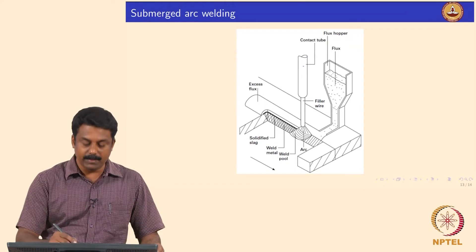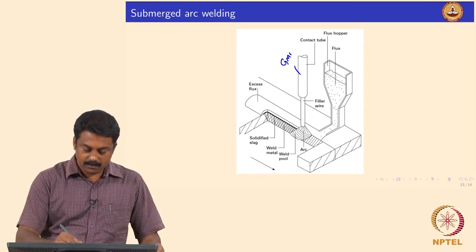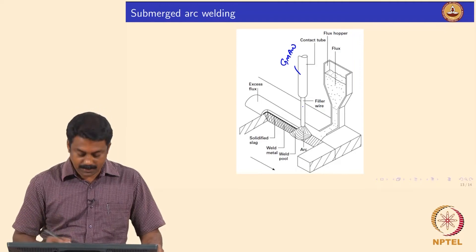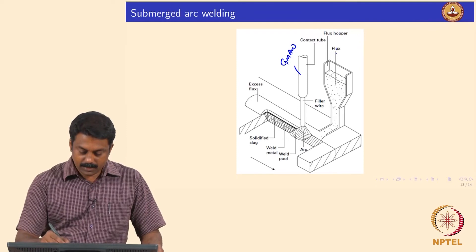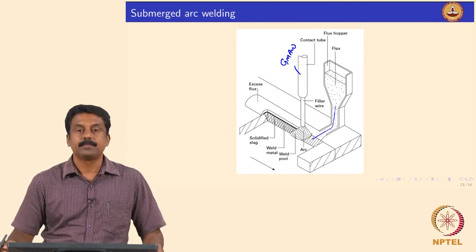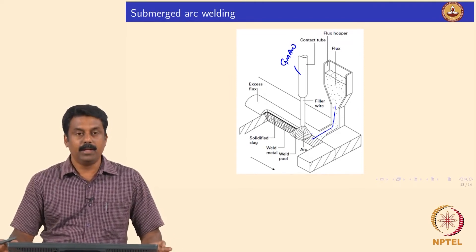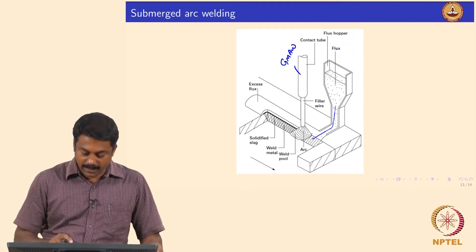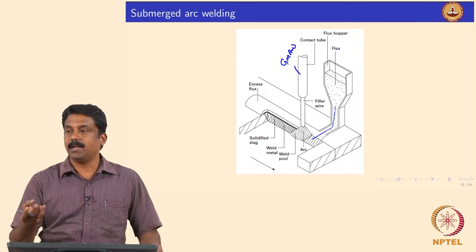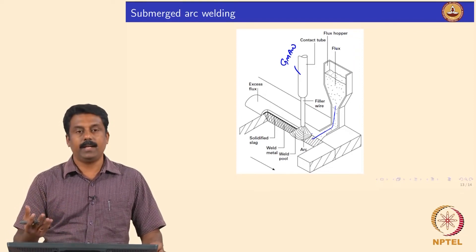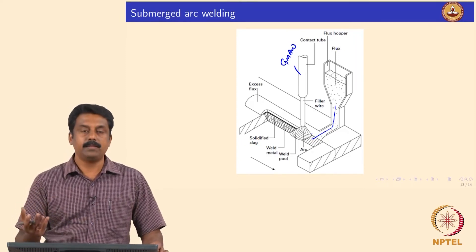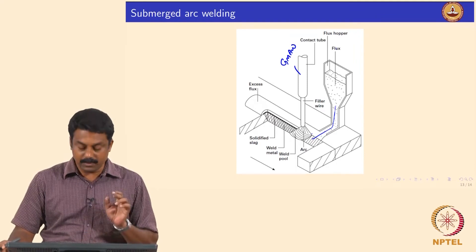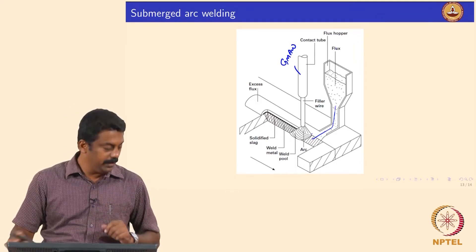The SAW schematic is similar to a GMAW setup. We have a contact tip, a larger diameter electrode, and an arc, but during this process we also send flux to submerge the arc - you would not see the arc visible outside. The flux acts the same way as in MMAW or flux-cored arc welding, providing shielding, influencing metal transfer, and generating shielding gas where necessary. The flux melts and forms a slag layer to provide complete protection and then can be removed, as seen in the video where someone uses a steel brush to remove the slag.